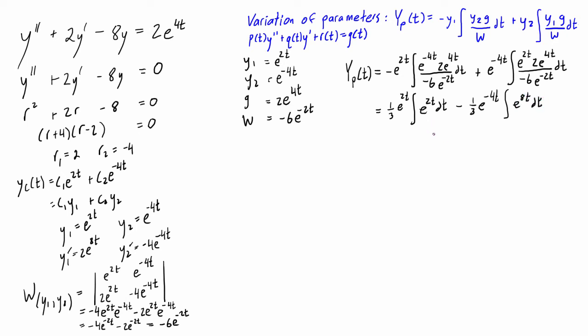All right, so these integrations actually aren't that difficult. We have one third, one third e to the 2t times one half e to the 2t. After we integrate, we'll actually get a constant here.